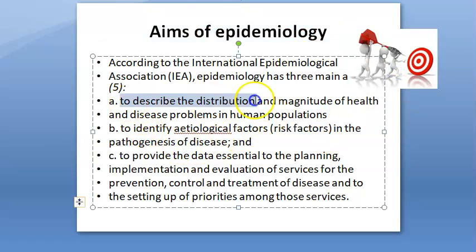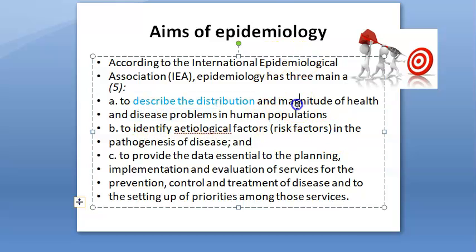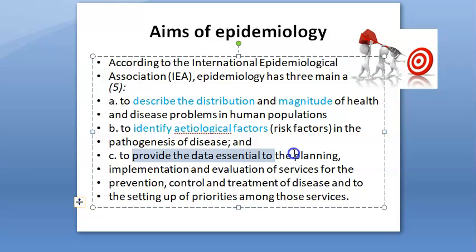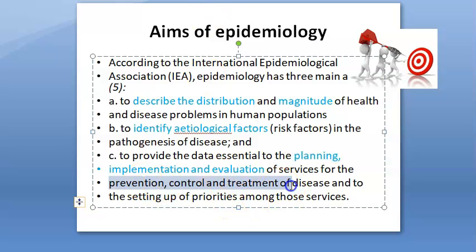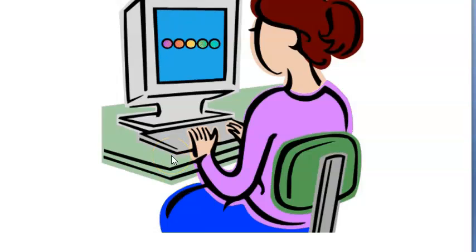The aims of epidemiology are three things: first, to describe the distribution and magnitude of health and disease problems — how big the issue is. Second, to identify the etiological factors and risk factors. Third, to provide data essential to the planning, implementation, and evaluation of services for the prevention, control, and treatment of diseases.